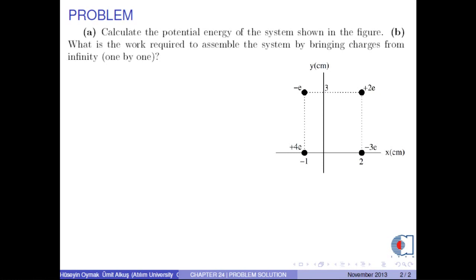Calculate the potential energy of the system shown in the figure. The electric potential energy of the system is calculated as the sum of all possible potential energies between pairs. The formula is the following: